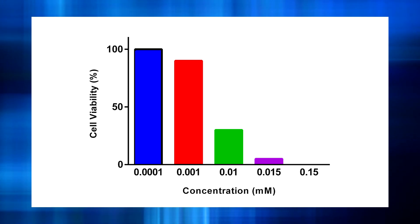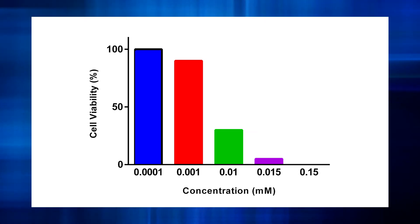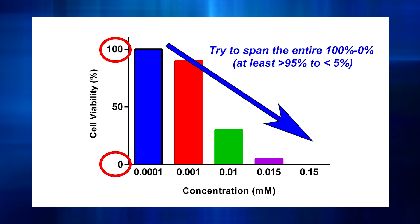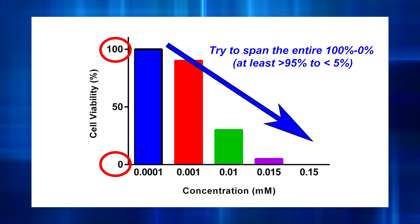Your concentration range should encompass the data points over which your viability drops from a hundred percent to zero percent.